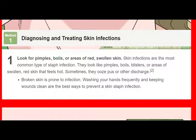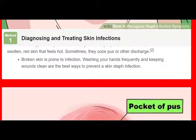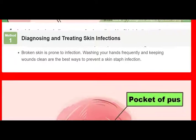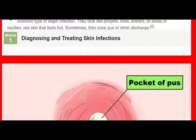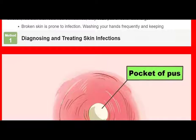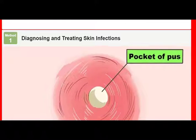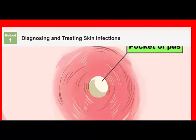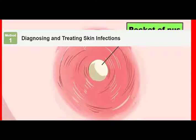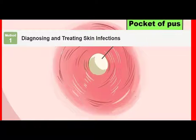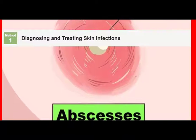Wash your hands before and after touching the area. Wash up thoroughly with soap and hot water before you clean the area or change a bandage. You wouldn't want to risk contaminating it further. After treating the infected skin, wash your hands again to prevent spreading germs. Soak a minor infection three times per day and keep it bandaged. Minor abscesses and skin infections often go away on their own with proper home care. Wash the infected area thoroughly, soak it in warm water for 10 minutes three times a day, and cover it with a sterile bandage.